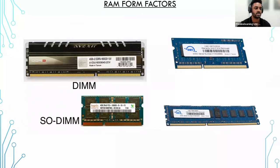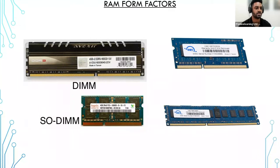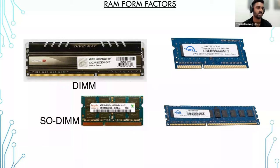Let's talk about the different form factors of RAM. For the most part, RAM comes in two sizes. The first is called DIMM, which stands for dual inline memory module, found in desktops and servers. The other is called SODIMM, or small outline DIMM, which is found in laptops and other small form factor computers.